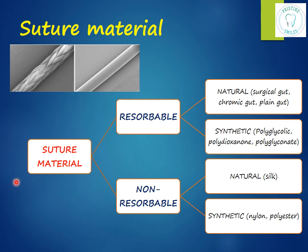Suture materials are of two types: resorbable and non-resorbable. Resorbable sutures are dissolved by the body tissues — there is no need for a second appointment for suture removal. Non-resorbable sutures remain in place until removed; they are not dissolved by body tissues, are less tissue reactive, and produce less scarring as long as they are removed on time.